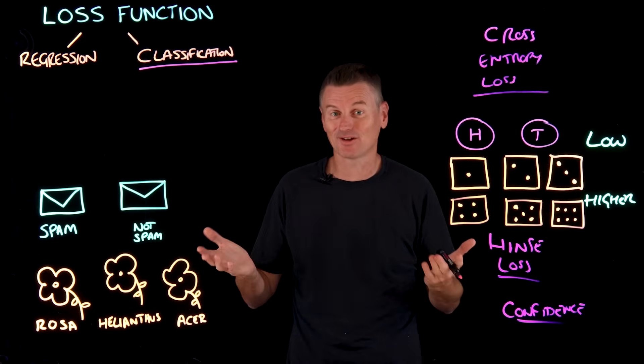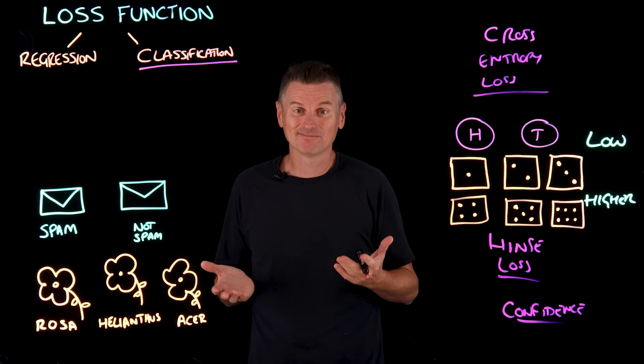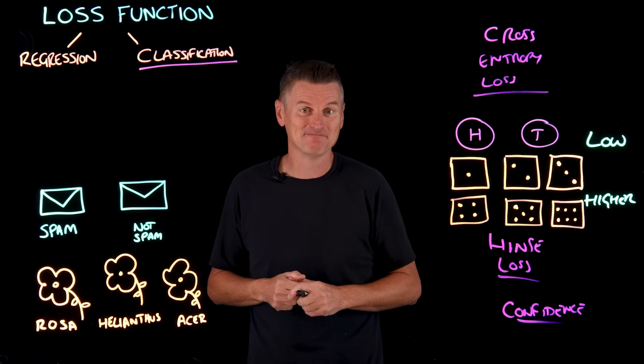So we've calculated our loss function. Great. But what can we do with that information? The primary reason for calculating the loss function is to guide the model's learning process. The loss function provides a numeric value that indicates how far off the model's predictions are from the actual results. By analyzing this loss, we can adjust the model's parameters, typically through a process called optimization. In essence, the loss function acts as a feedback mechanism.